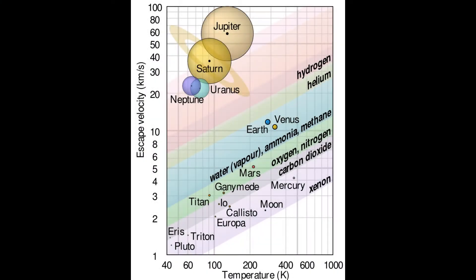We can differentiate all the molecular gases in our atmospheres across our solar system into light gases and heavy gases. Depending on how far the planet is from the sun temperature-wise, and how big and heavy the planet's gravity is, it will retain both heavy and light gases, or just retain heavy gases, or no gases at all.